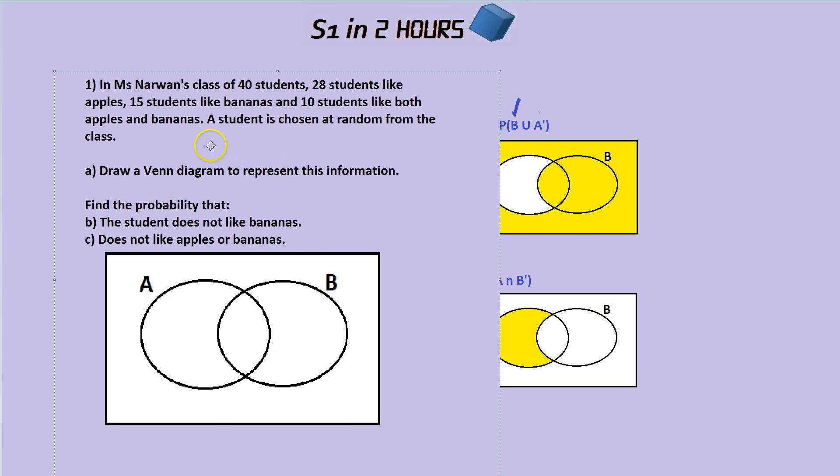Okay, so in Miss Narwan's class of 40 students, 28 students like apples for A, 15 students like bananas for B, and 10 students like both apples and bananas. A student is chosen at random from the class. Draw a Venn diagram to represent this information. So here is my killer tip. Start from the middle and work outwards. So what's the middle? The middle would be both A and B.